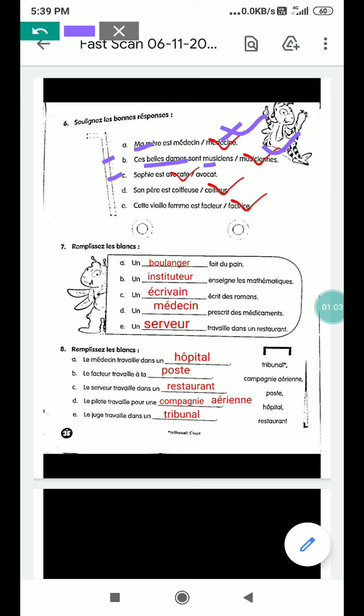Part D, son père a coiffeur. So his father, Sophie is a name here. C part, sorry. Sophie is a name, and D part is son père a coiffeur. Coiffeur is a barber. So son père, his father. P-E-R-E, it means father.